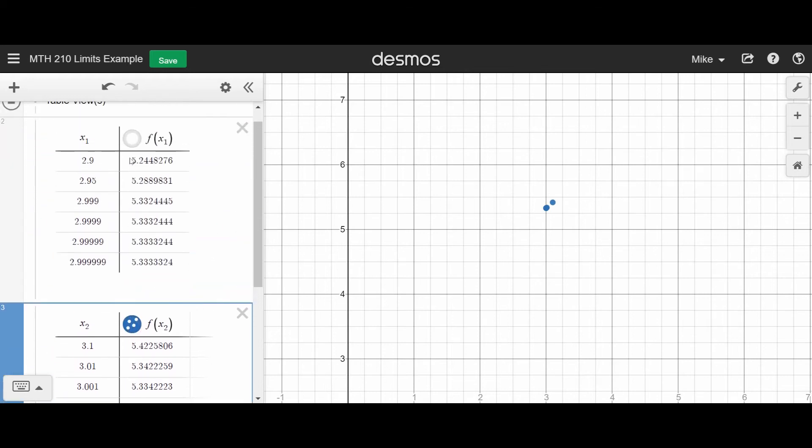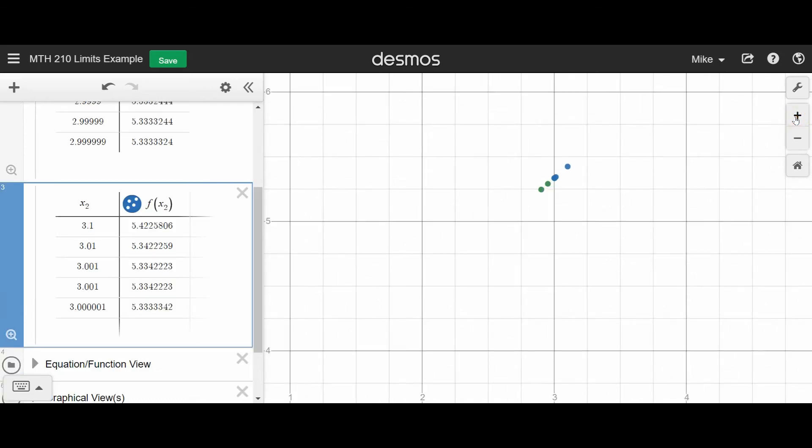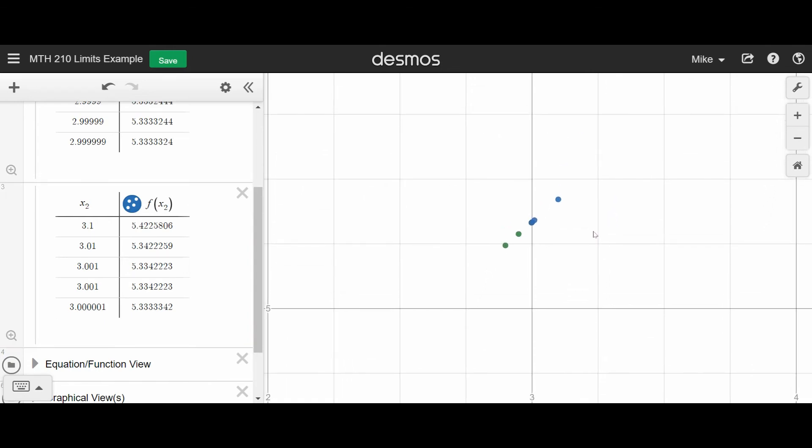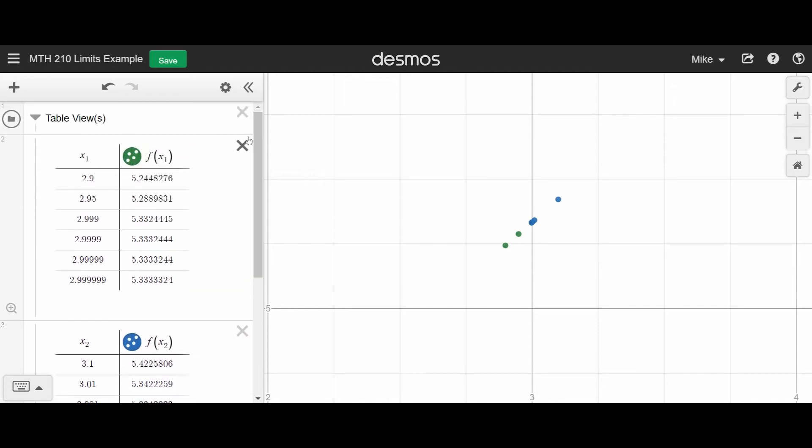So that would be what it might mean to think about the limit as x approaches 3. In this case, the limit would be about 5.33. That would be my best guess. And you can see that the values of these points all seem to be converging on that spot. So that might be how you'd evaluate a limit using a table.